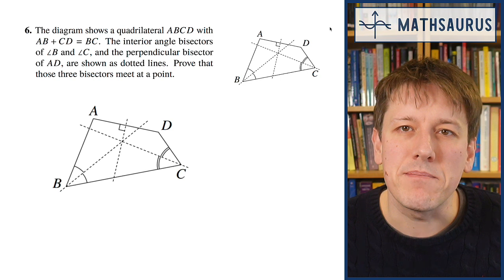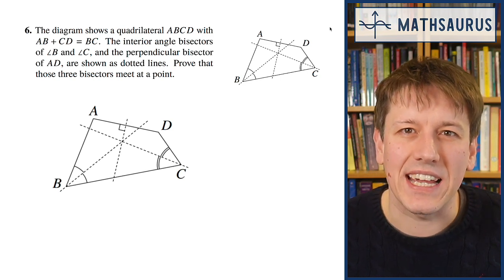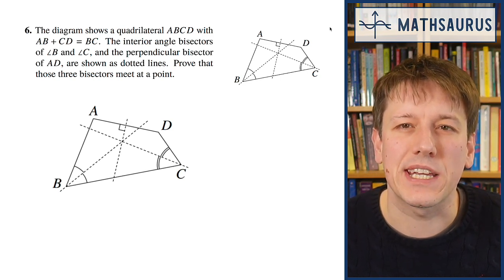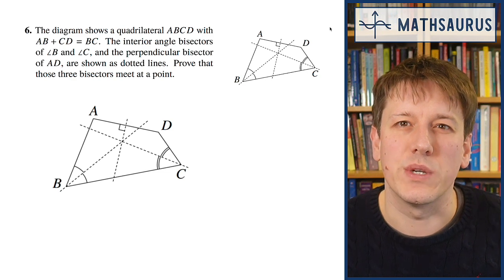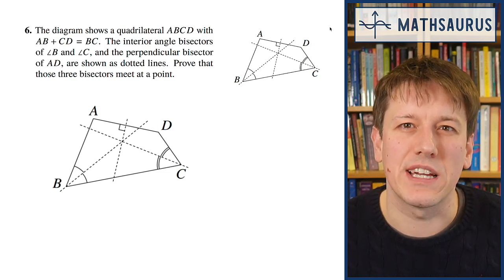The interior angle bisectors split the angle exactly into two equal parts, and the perpendicular bisector of a line splits the line into two equal parts and goes through at right angles to that line.